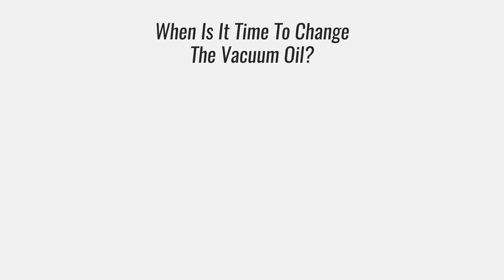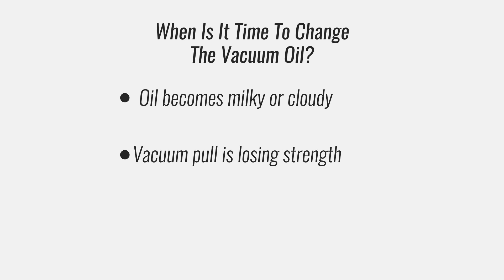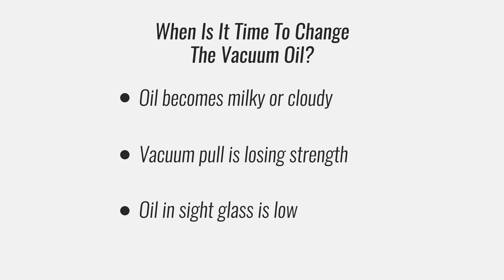About every 30 hours of use, the oil in the vacuum pump should be changed. A few good signs that it is time to change the oil are the oil visible in the sight glass becomes milky or cloudy, the vacuum pull is losing strength, or the oil level in the sight glass is low.